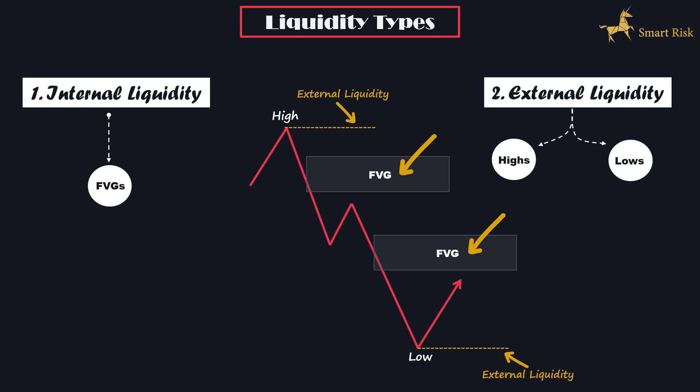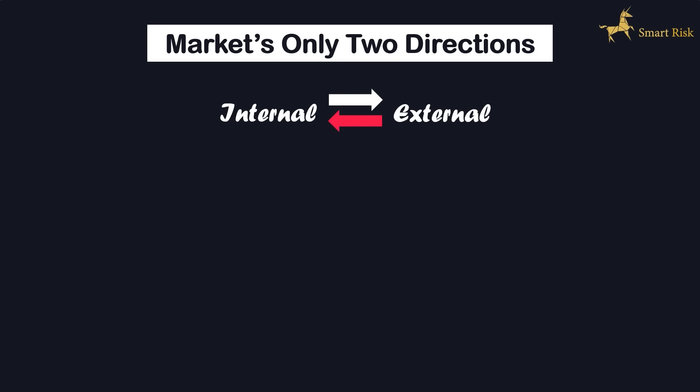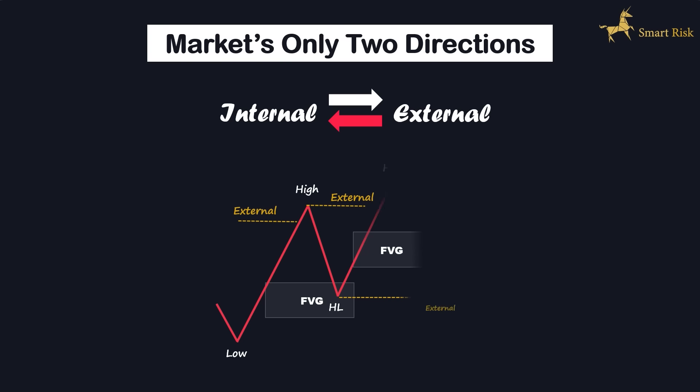Price in the market always moves between two types of liquidity: internal and external. Imagine it like a continuous circle, where price moves either from internal to external liquidity, or from external to internal liquidity. In simple terms, price either goes from a high or low point towards a fair value gap, or from a fair value gap towards a high or low point. This is the basic movement pattern that the market follows.